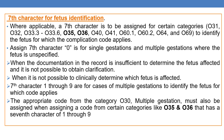As discussed earlier, a seventh character is applied for identification of the fetus. A seventh character is assigned to certain categories such as O31, O32, O33.3, O33.6, O35, and O36. These codes require a seventh character. Assign seventh character 0 for single gestations and for multiple gestations when the fetus is unspecified. It can also be used when documentation in the record is insufficient to determine the fetus affected and clarification cannot be obtained.